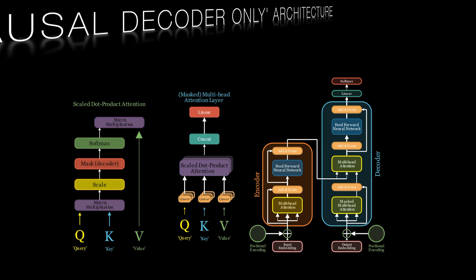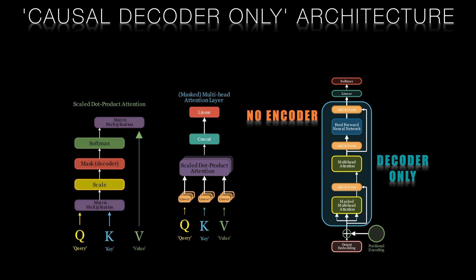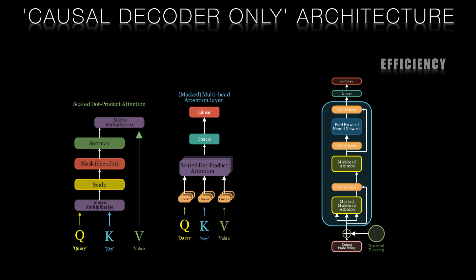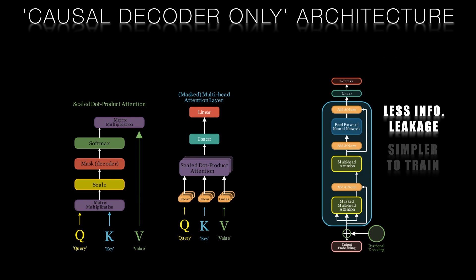One interesting design choice made by the Bloomberg team is the adoption of a decoder-only causal language model. This means that Bloomberg GPT is designed to generate text in a left-to-right, step-by-step manner, allowing it to create coherent and contextually relevant outputs. This design choice offers several advantages, including improved efficiency during training, faster inference, and a reduced risk of information leakage between the input and output sequences. Additionally, it simplifies the architecture, making it easier to train and maintain.